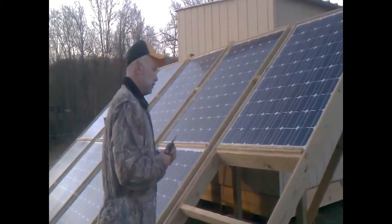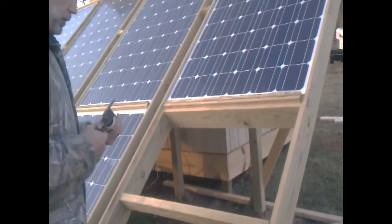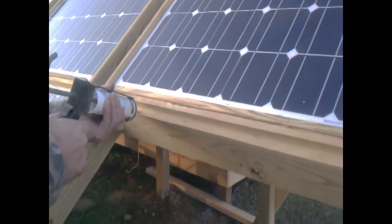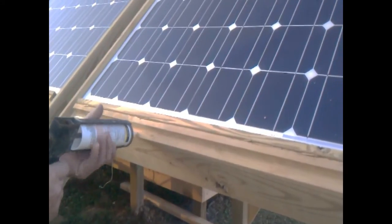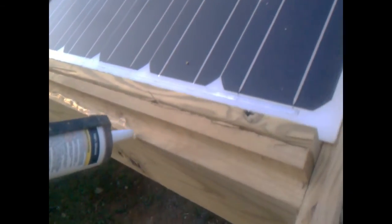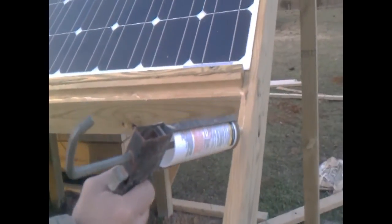Now we're going to put a bead of silicone in our rack here to hold the panel. And we will go all the way around with a bead that's approximately a quarter inch, start at the top, we'll work our way to the bottom. And then we'll lay the panel in right on top of this bead.